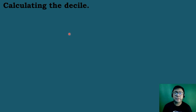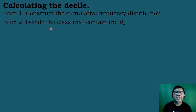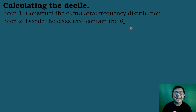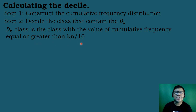These are the steps on how to compute the deciles for the grouped data. The first one is to construct the cumulative frequency distribution. After that, we will identify the class that contains the decile sub k class by using the formula k times n all over 10. The d sub k class is the class with the cumulative frequency which is equal to or greater than the answer computed using this formula.